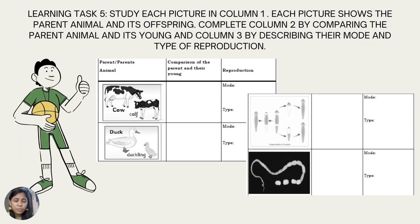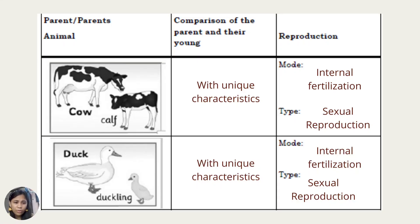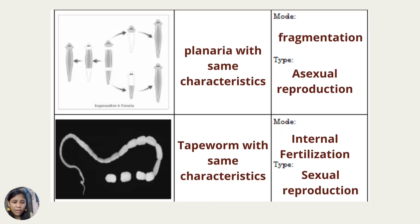Learning Task 5: Study each picture in column 1, which shows the parent animal and its offspring. Complete column 2 by comparing the parent animal and its young, and column 3 by describing the mode and type of reproduction. The answers: For the cow — unique characteristics, internal fertilization, sexual reproduction. For duck — unique characteristics, internal fertilization, sexual reproduction. For planaria — same characteristics, fragmentation, asexual reproduction. For tapeworm — same characteristics, internal fertilization, sexual reproduction.